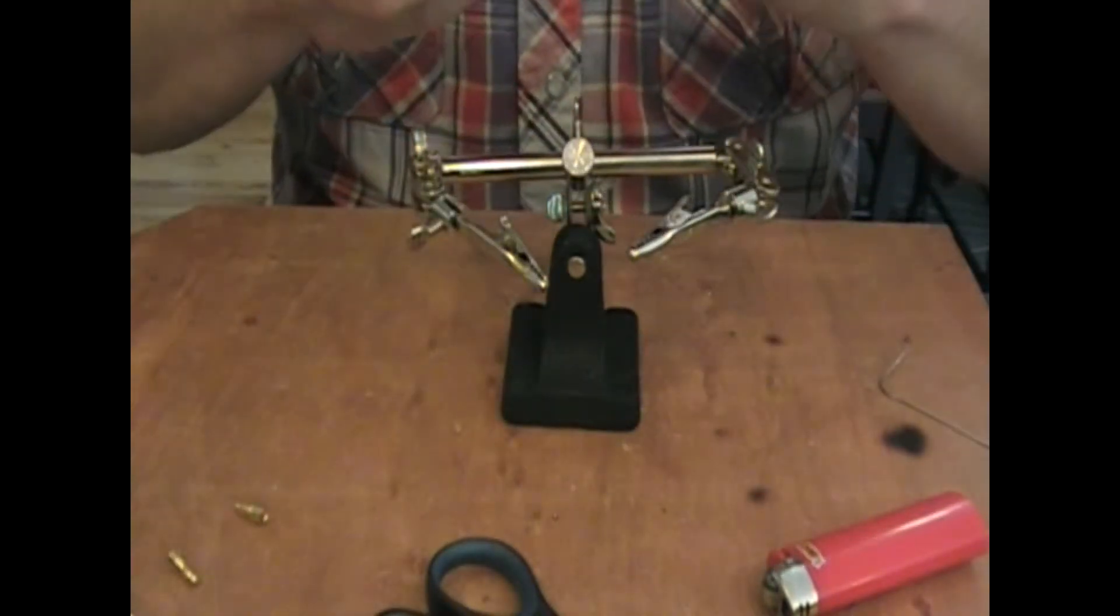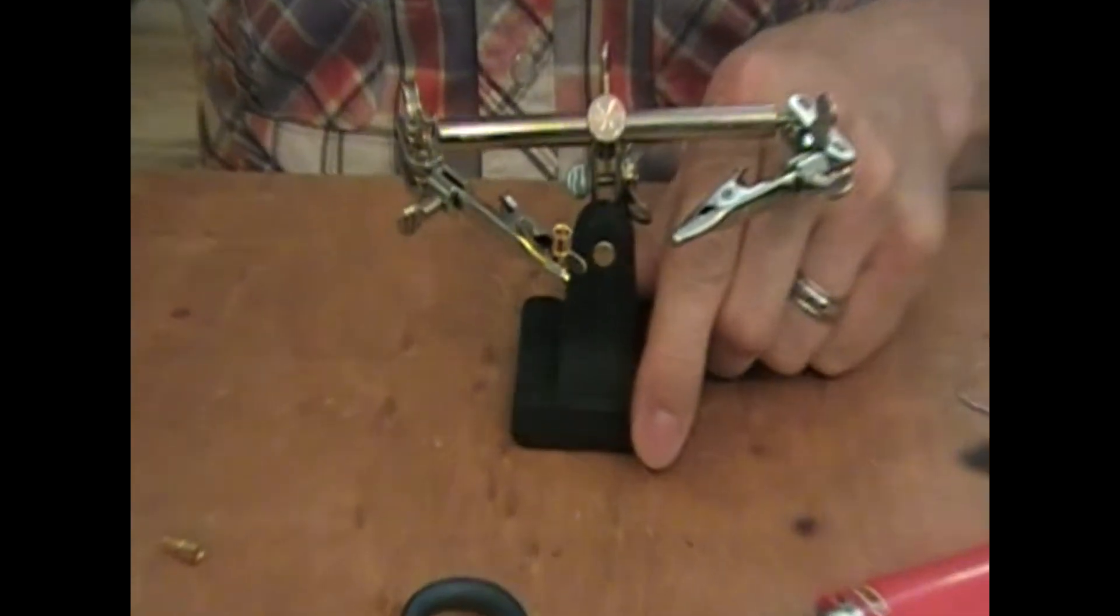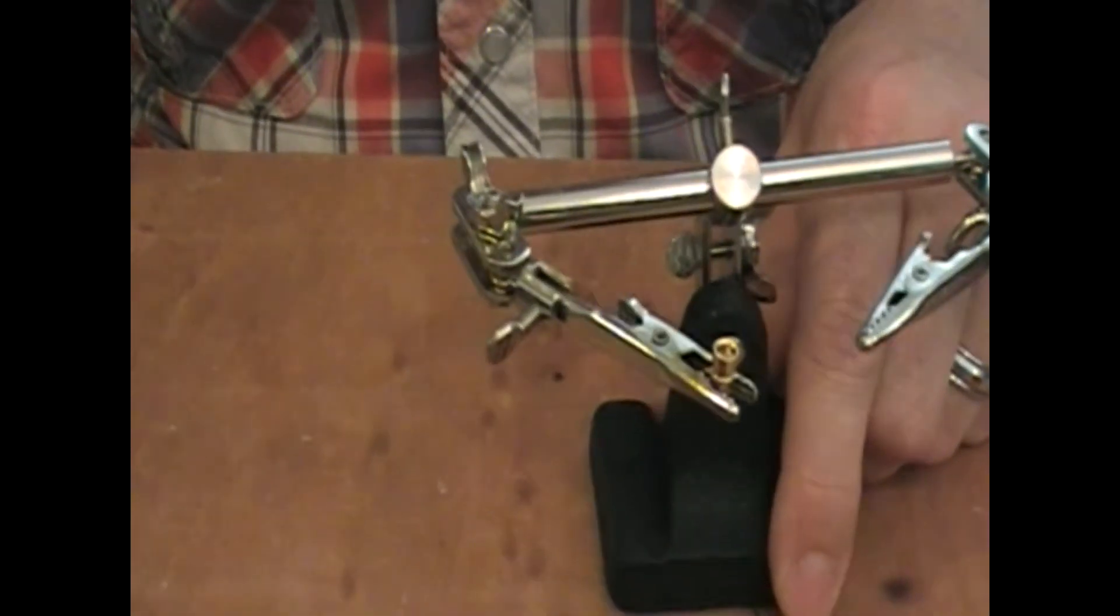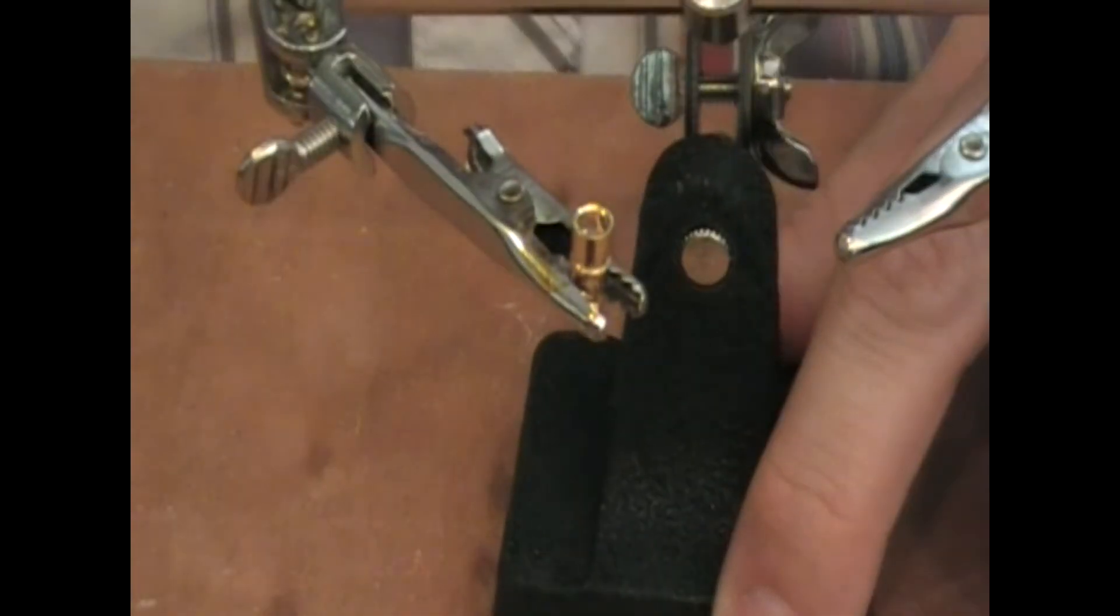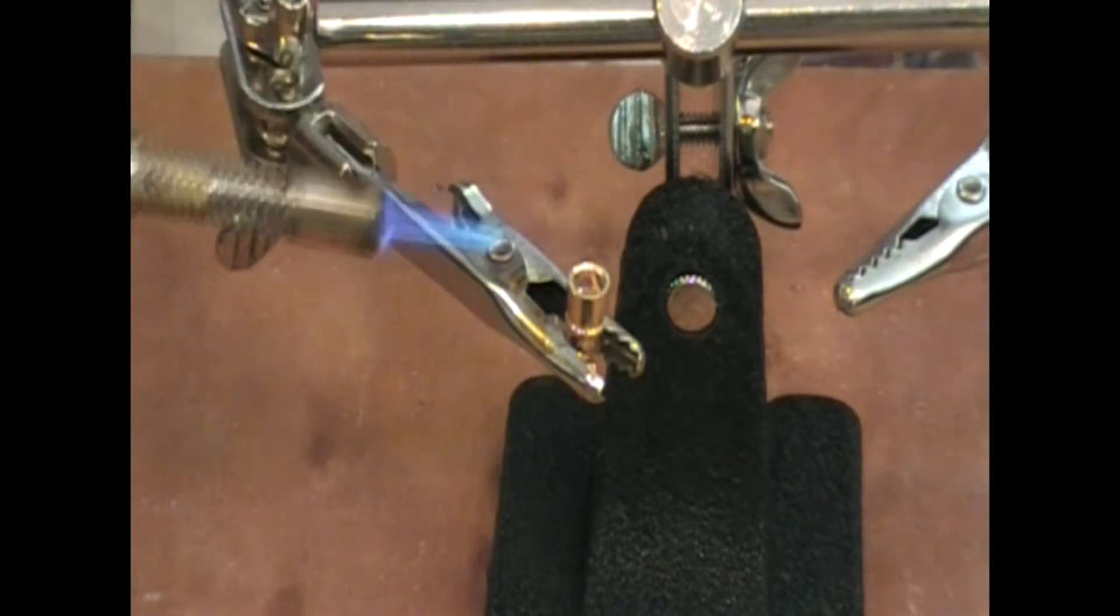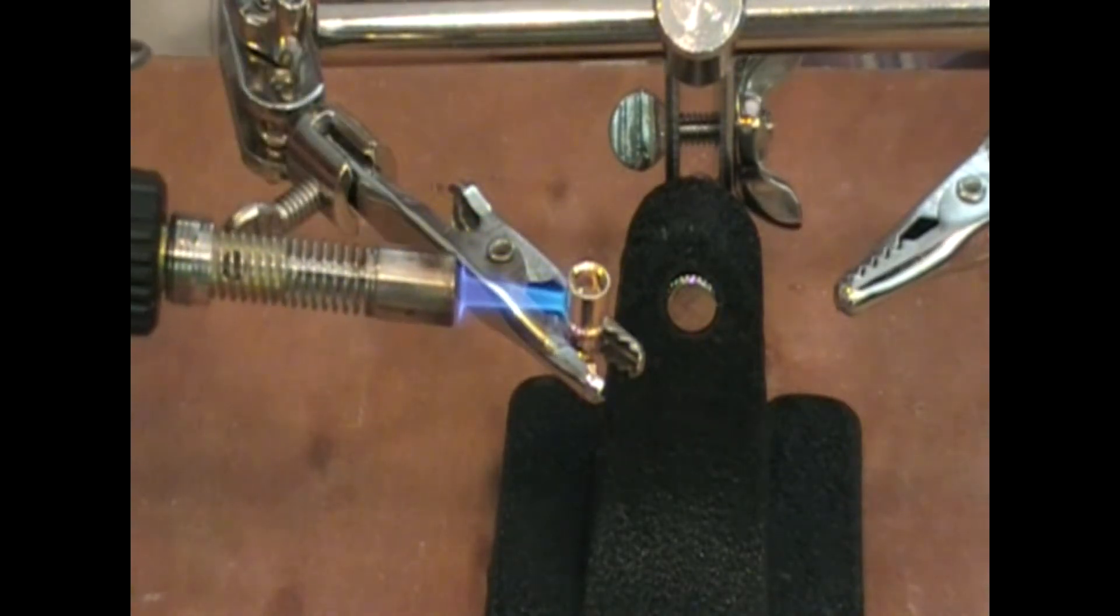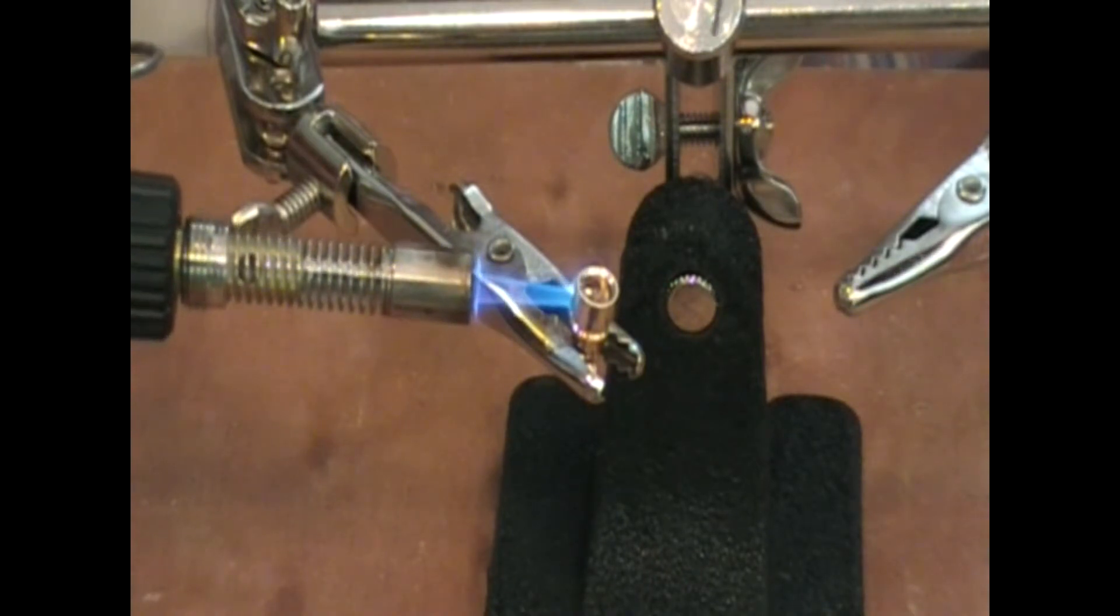First we're going to place one of the bullet connectors in the gator clips and then we'll light our torch and start heating up the connector. You want to make sure that your connector is nice and hot. We don't want any cold solder joints.